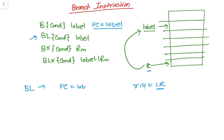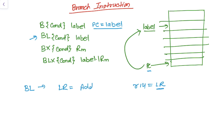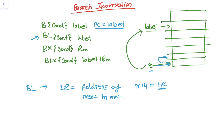When using BL, the PC is loaded with the label address and the LR (link register) is loaded with the current PC. Specifically, the link register is loaded with the address of the next instruction to be executed. So if your PC is here, before jumping to the new address, the address of the next instruction is stored into the link register, and then the PC is loaded with the new address pointed to by the label.